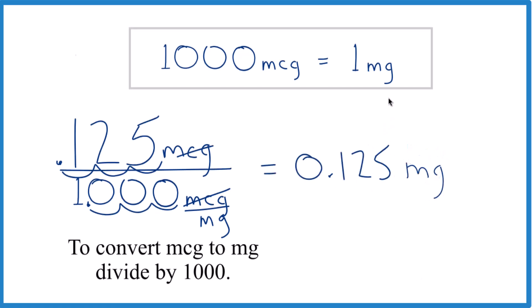And basically, all we did is take our 125 micrograms and divide it by 1,000. That's how you do it. This is Dr. B, and thanks for watching.